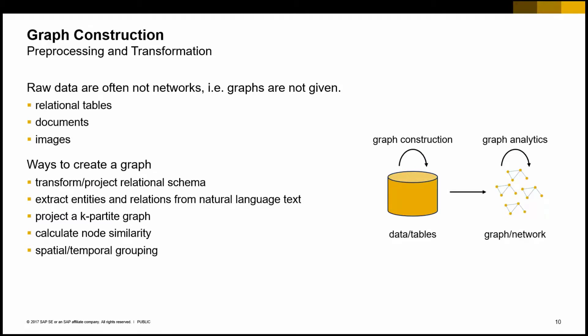Besides domain-specific algorithms, there is something else to realize: graphs are usually not given. The raw data at hand that describes your domain is typically stored in relational tables, or it comes in the form of documents, natural language text, images, or other formats. The task at the very beginning of any graph analysis project is constructing your graph — identifying the edges and extracting the essence of your graph out of your data.